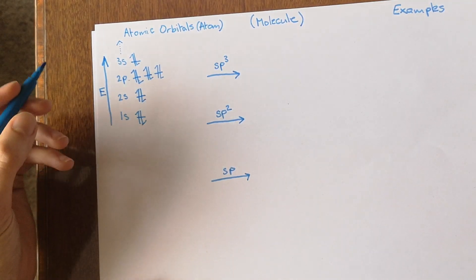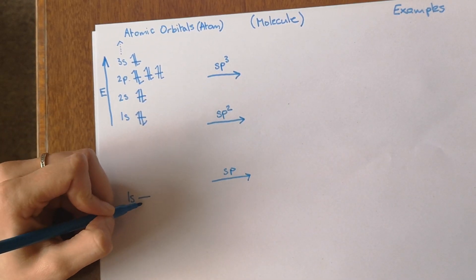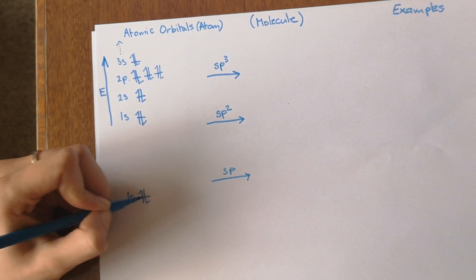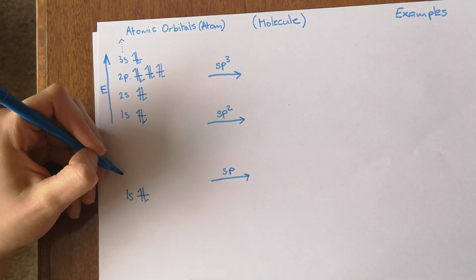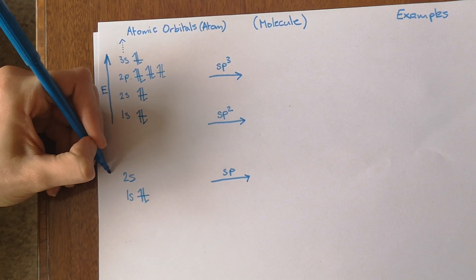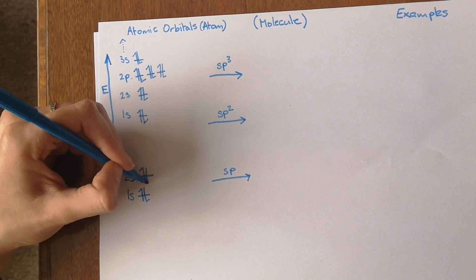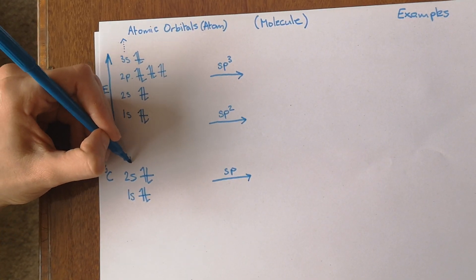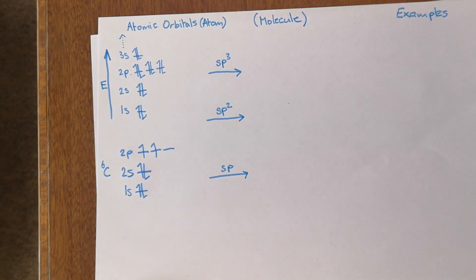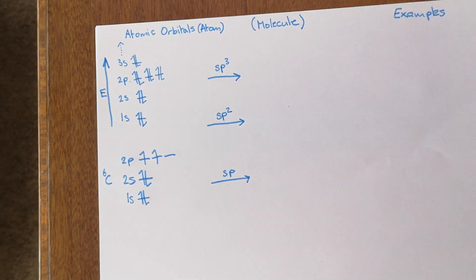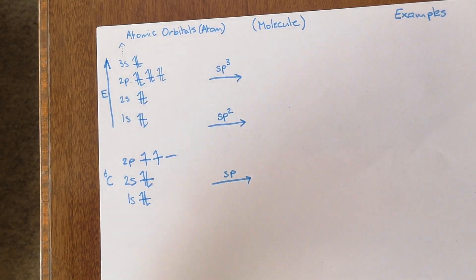If you take carbon as an example — carbon has six electrons. The 1s orbital is filled and will be completely unreactive because it's the inner shell. The next two electrons go into the 2s, and the remaining electrons go into separate orbitals in the p subshell. But when an atom tries to form bonds, its orbitals don't stay this way — they actually start to hybridize.